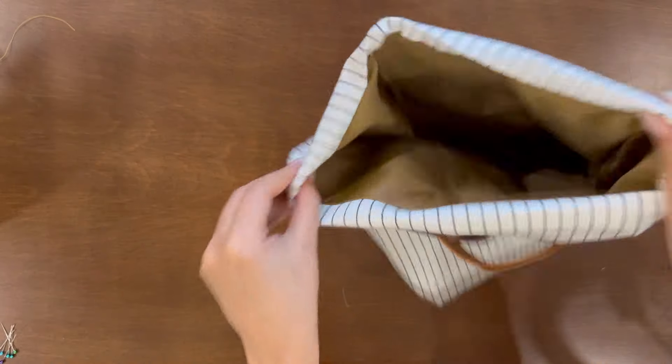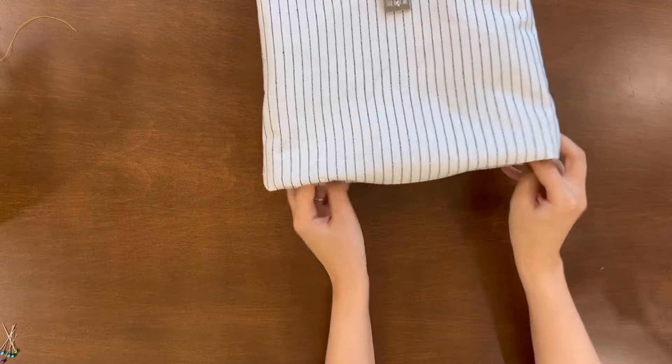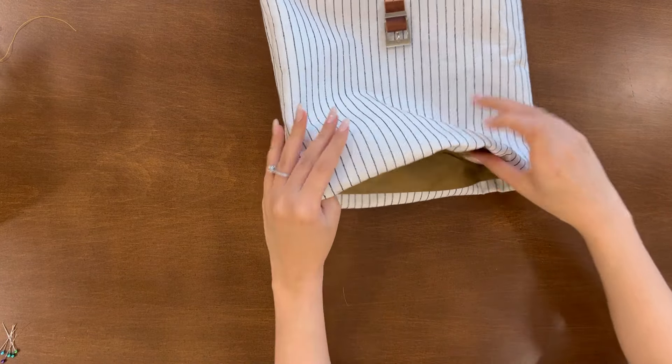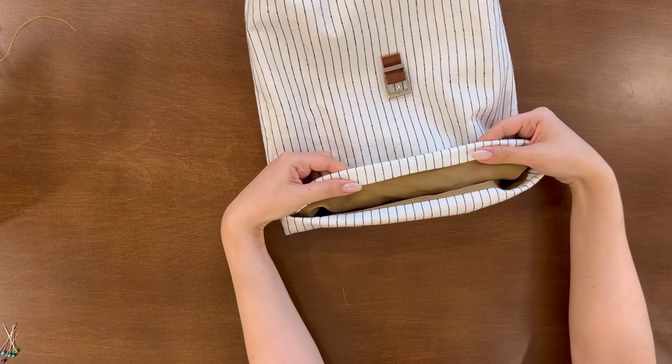Since you fix the corners on lining and main fabric together, when you're turning it right side out, you see about 2cm of the main fabric folded inside the lining.